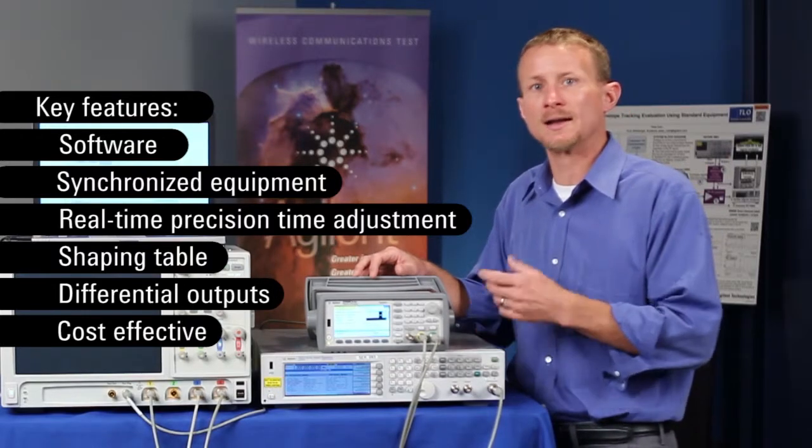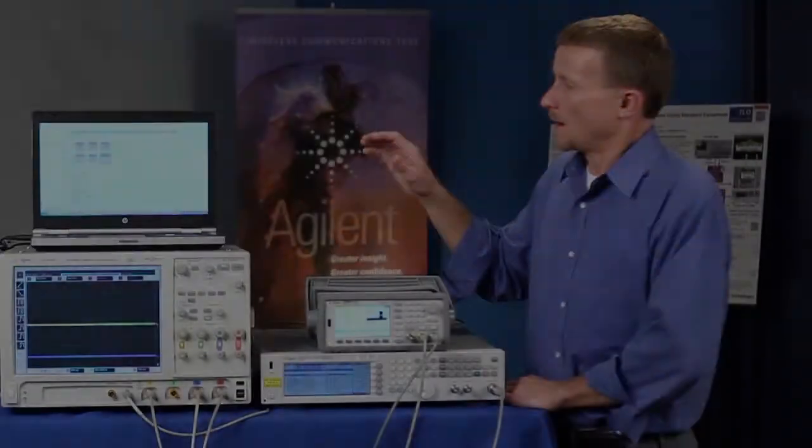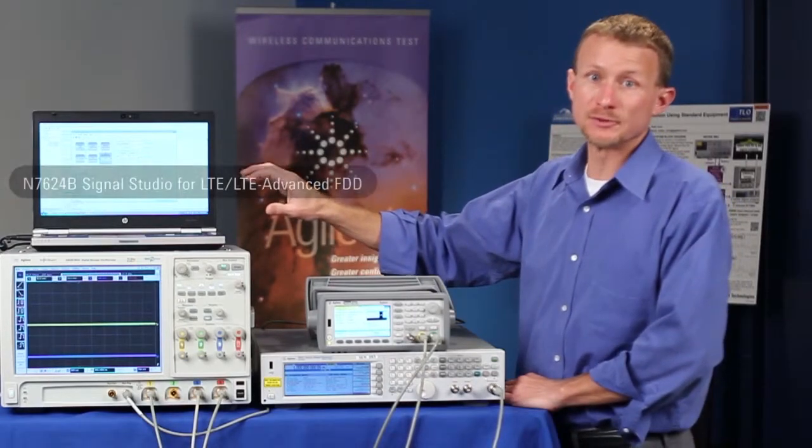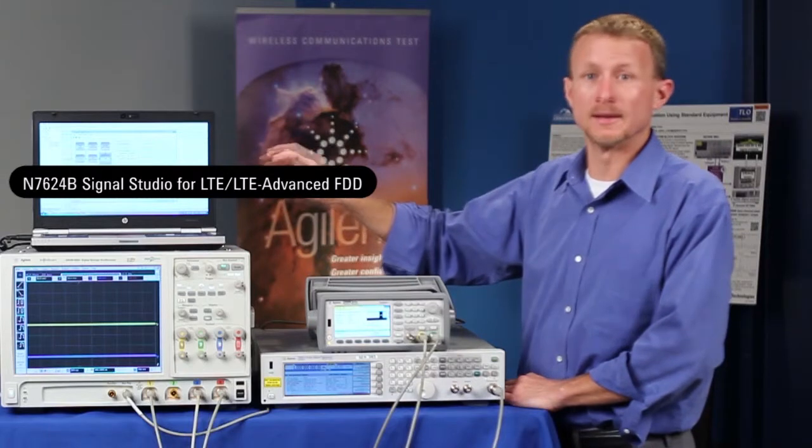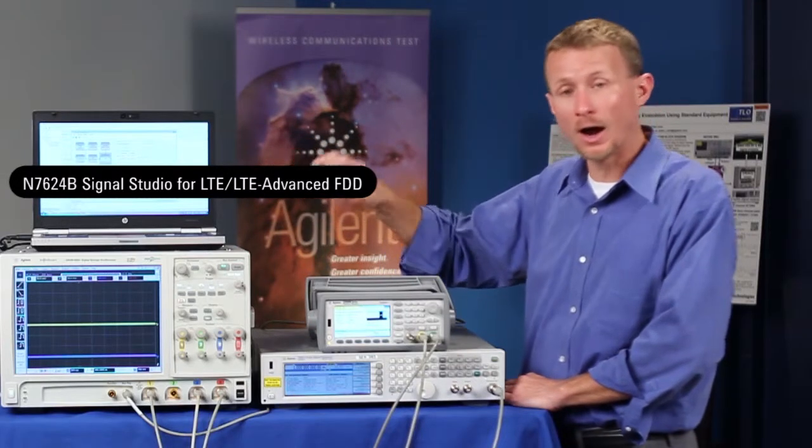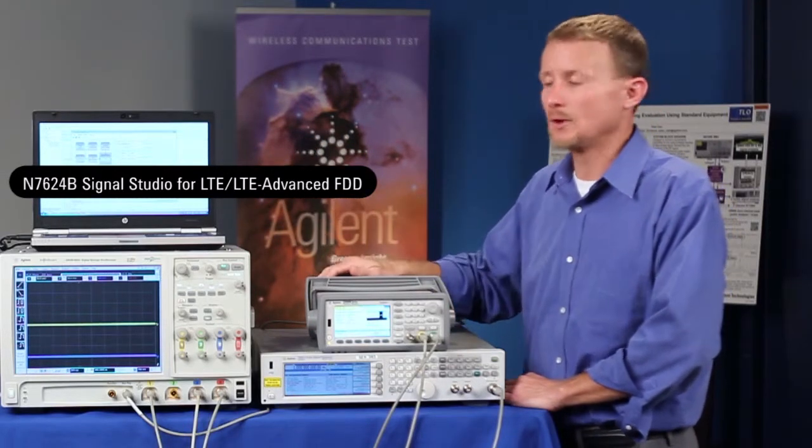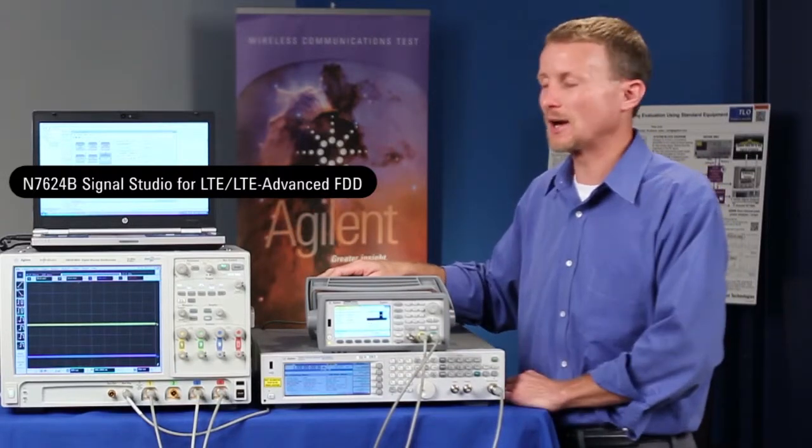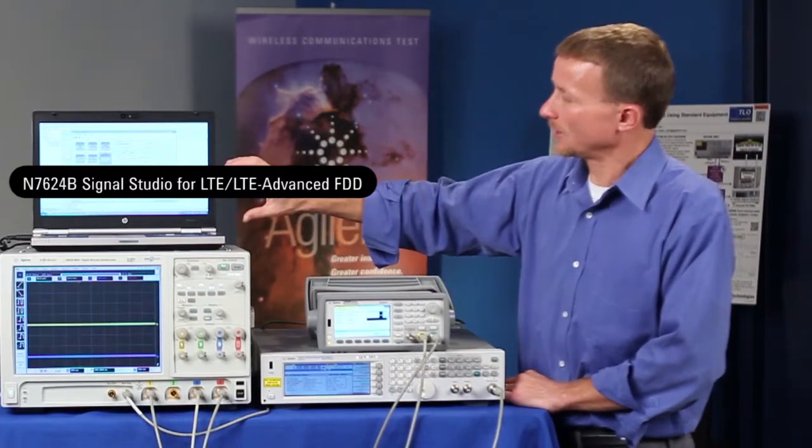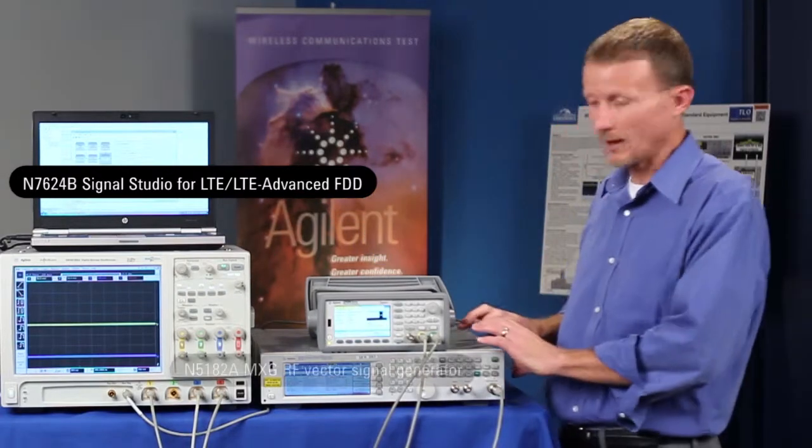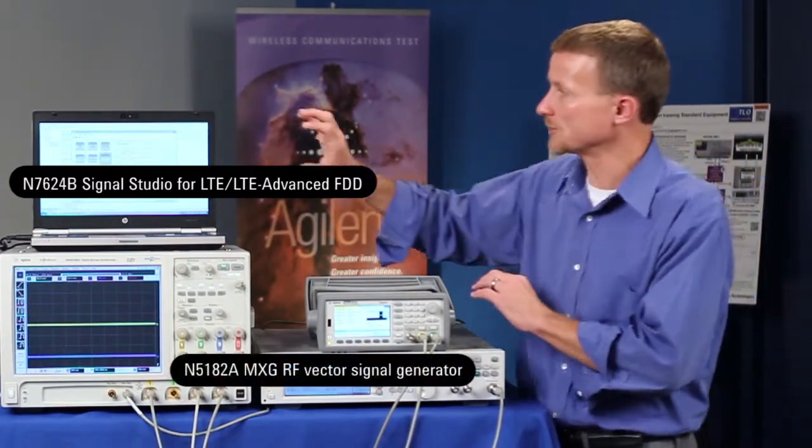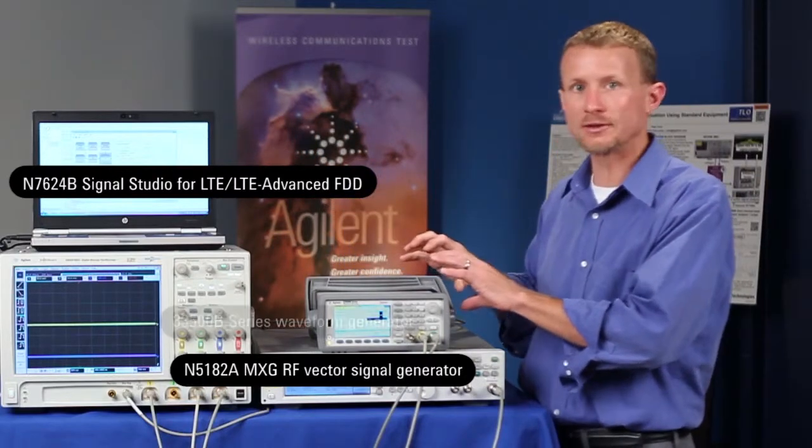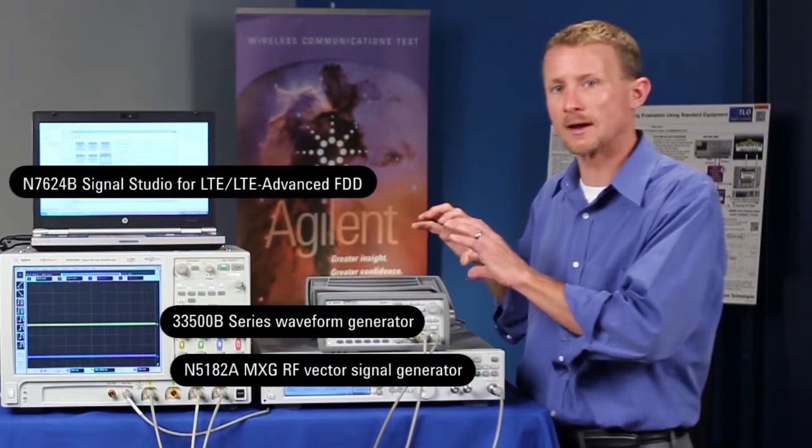So let's take a look at our demo setup. On our table we have a laptop running the Signal Studio LTE software. This software is used to create both the RF signal and the envelope. We're using LTE since this is one of the main drivers behind the envelope tracking technique. So we generate the baseband signal which goes into our MXG RF signal generator and we also generate the envelope of that RF signal which is downloaded into our 33500 series ARV.